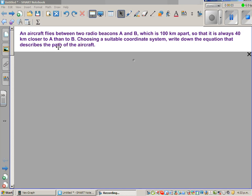An aircraft flies between two radio beacons A and B which are 100 kilometers apart so that it is always 40 kilometers closer to A than to B. Choose a suitable coordinate system. Write down the equation that describes the path of the aircraft.